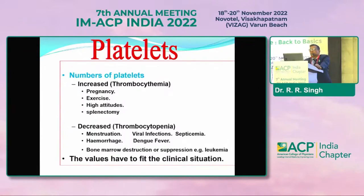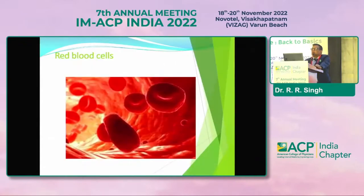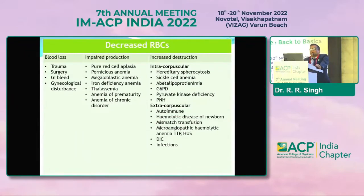Platelets are increased after exercise, in pregnancy, at high altitudes, and in post-splenectomy patients. The count is low physiologically during menstruation, and pathologically after hemorrhage, certain viral infections like septicemia and dengue fever, bone marrow diseases, and in leukemia patients. RBCs are decreased in trauma, surgery, GI bleed, impaired production as in aplastic anemia, and increased destruction as in G6PD deficiency, hemolytic anemia, certain infections, or disseminated intravascular coagulation.